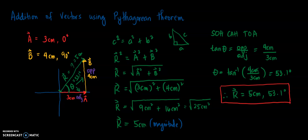You can only use the Pythagorean theorem to find the resultant vector if and only if the given vectors form a 90-degree angle, or if the given vectors are perpendicular with each other. Thank you for watching.